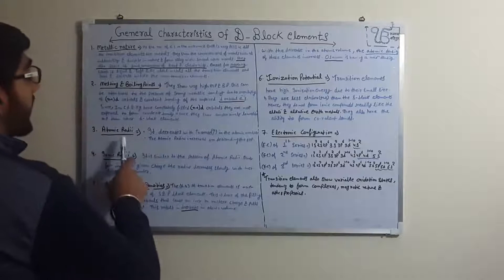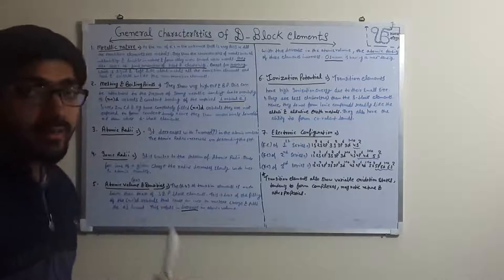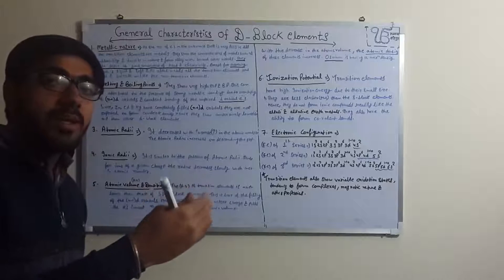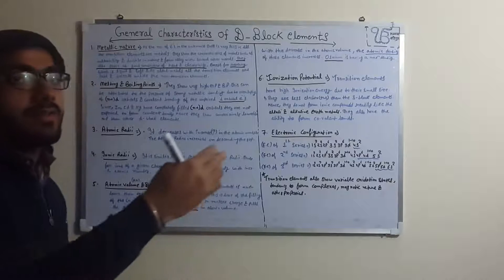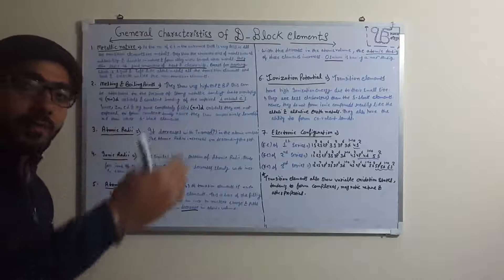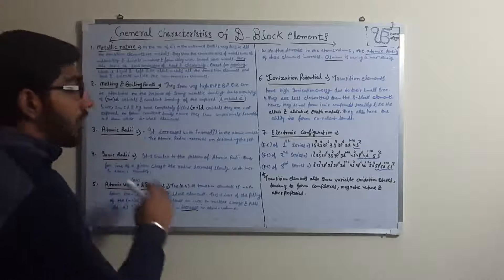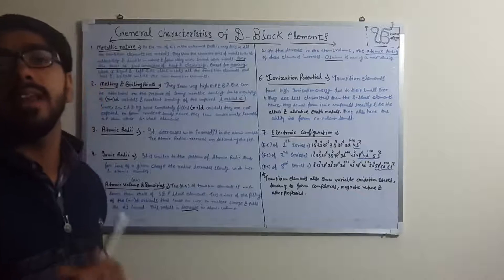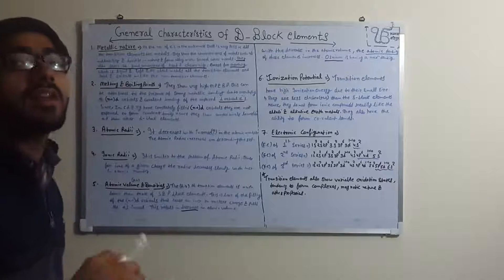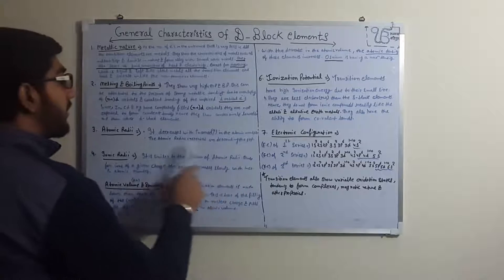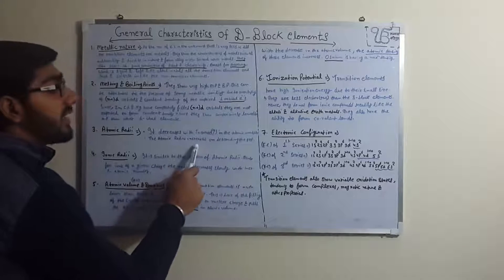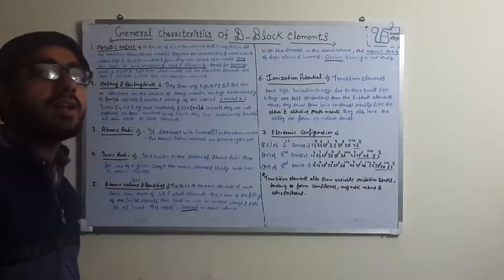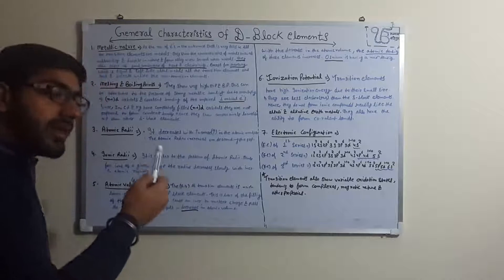Now the third point: atomic radii. Atomic radii decreases with increase in atomic number — as atomic number increases (2, 4, 6, 8, 10...), atomic radii decreases. So atomic radii is inversely proportional to atomic number. The second sub-point is that atomic radius increases on descending a group in the periodic table.